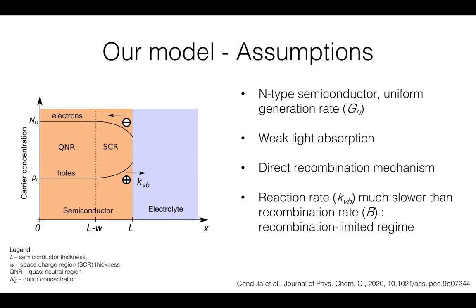which is, of course, a strong assumption, which later on we want to reduce and go also to the Shockley-Read-Hall recombination in the future. The reaction rate KVB from the valence band is assumed to be much slower than the recombination rate, and such regime we denote the recombination-limited regime.